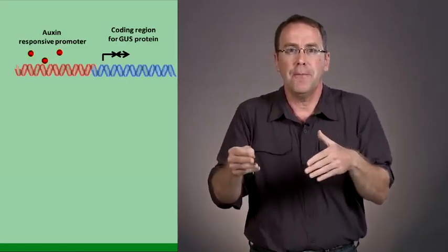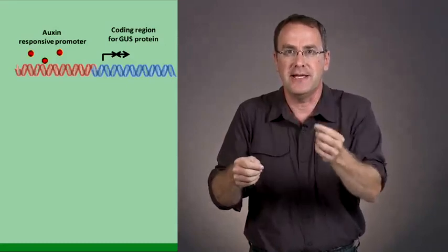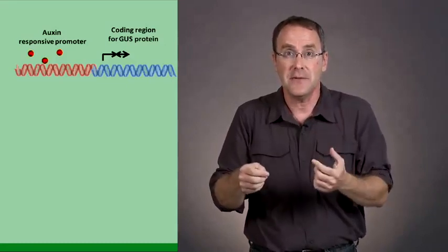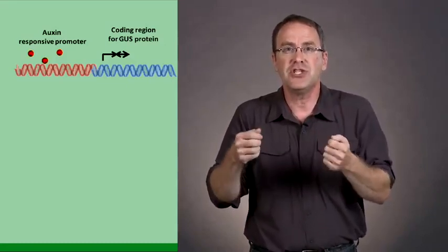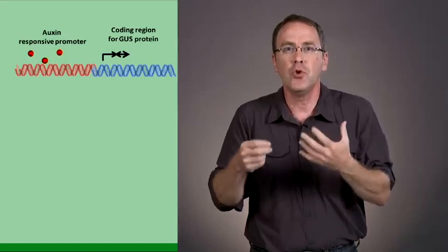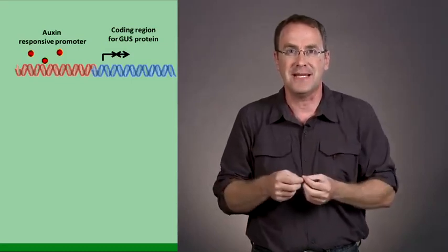The gene I'm going to talk about is called beta-glucuronidase. We call it GUS. Beta-glucuronidase is a gene that, when active, causes a blue color to be formed in the plant cells.